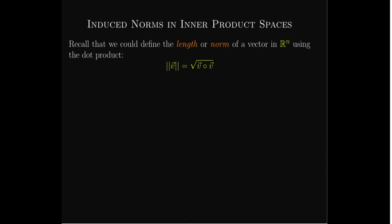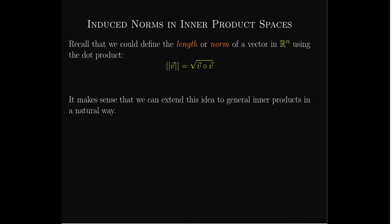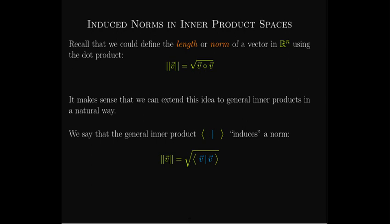We defined the length of a vector in Euclidean space using the dot product — it was just the square root of the dot product of the vector with itself. We can easily extend that to general inner product spaces. If we have an inner product with the positivity property, we can say that the norm or length of a vector V in a general inner product space is the square root of the inner product of V with itself.